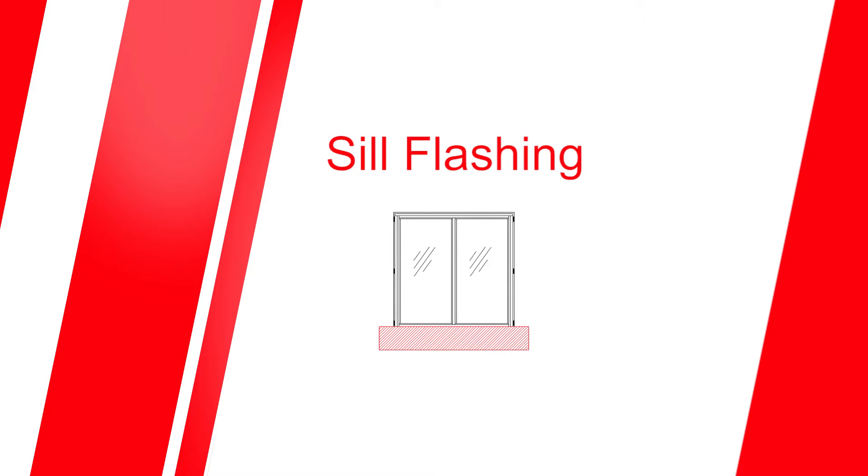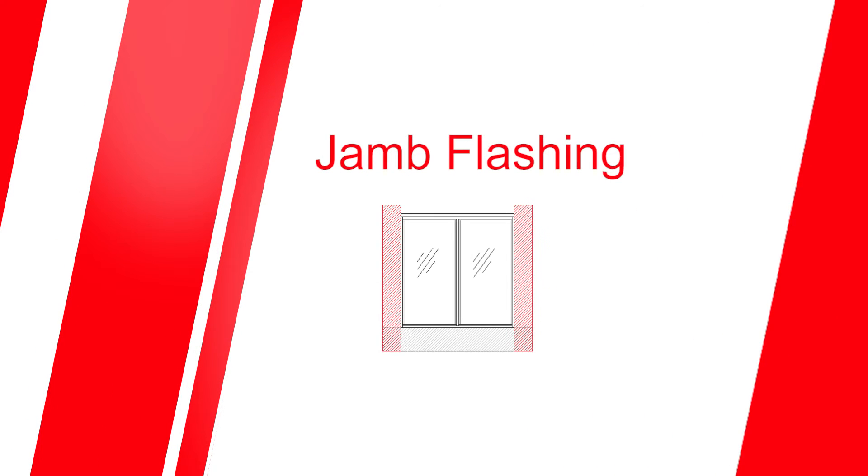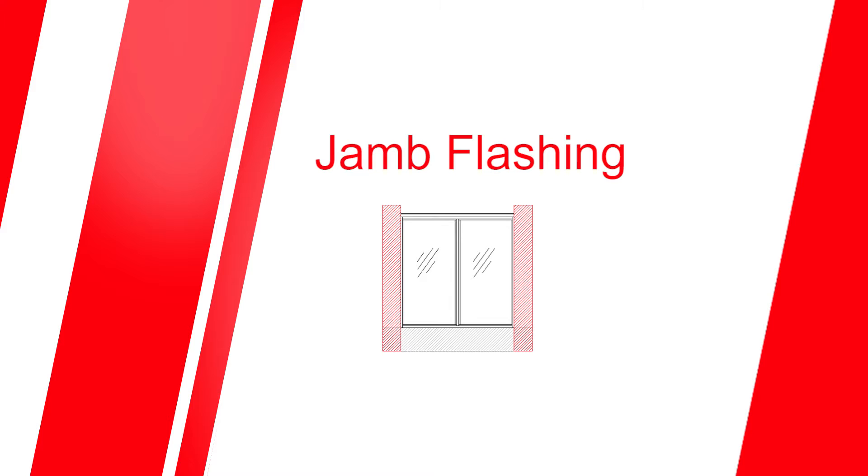The seal flashing is fitted to the bottom of the window and extends on either side at least 150 millimeters. The jam flashing should be at least 150 millimeters wide and attached to both sides of the window starting 150 millimeters above the window and continues down to overlap the seal flashing.